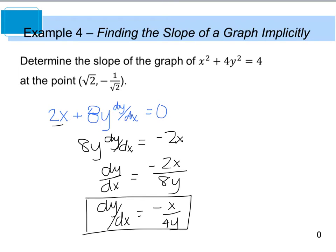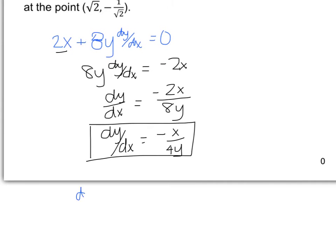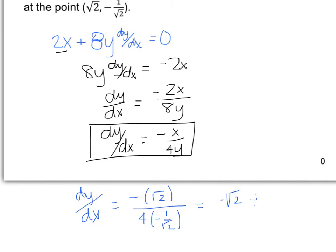This right here is the equation of the derivative. Now I want to evaluate that at the point (√2, −1/√2). So dy/dx equals negative √2 divided by 4 times negative 1 divided by √2. When I rewrite this, I have negative √2 divided by negative 4 divided by √2. The negatives cancel, and I have √2 times √2 over 4. The square root of 2 times the square root of 2 is 2 divided by 4, so the actual slope equals 1/2.